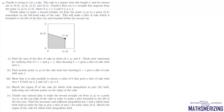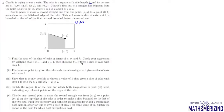In question number four, Charlie is trying to cut a cake that is a square with side length 2, with corners at (0,0), (2,0), (2,2), and (0,2). Charlie's first cut is a straight line segment from point (x,y) to (x,0), where x lies between 0 and 2. The second straight cut goes from (x,y) to (0,k), where k lies somewhere on the left-hand edge of the cake. The first question is: find the area of the slice of cake in terms of x, y, and k.